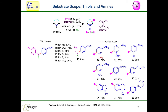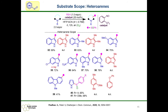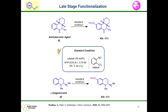During exploration of substrate scope, several thiols and several amines were screened and we found very good to excellent yield of sulfoxide. Several heterocycles were also screened: C3 selectivity of indoles was obtained and in another case para-selectivity prevails. As an application, late-stage functionalization was carried out — the anti-tubercular agent and augustrine were also employed under our standard condition and successfully produced the para-selective sulfoxide in very good yield.